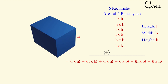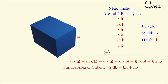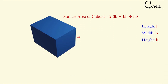On adding all the areas, we got the formula of surface area of the cuboid, which is 2(LB + BH + HL). This is the formula of the surface area of the cuboid.